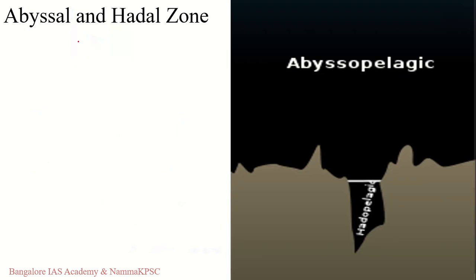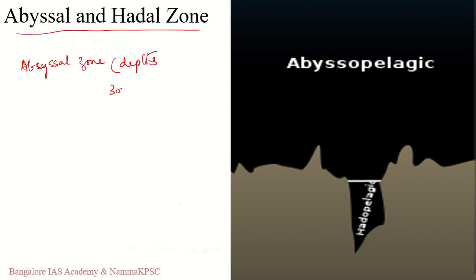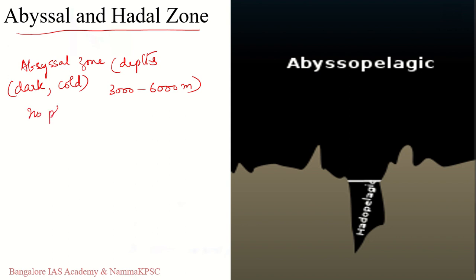The abyssal zone, or abyss, is more or less a part of the aphotic zone, found at depths of 3,000 to 6,000 meters. It remains in perpetual darkness at low temperatures of around 2 to 3 degrees Celsius. There is no sunlight at all, so there are no plants producing oxygen in this part of the water body.